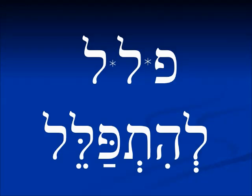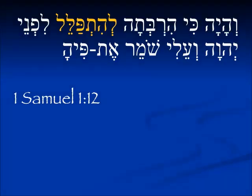In the normal Hitpa'el, a verb you must be familiar with: l'hitpalel, which means to pray. In the Hitpa'el we see the other forms — the past tense form has He-Tav — l'hitpalel, to pray. In 1 Samuel 1:12, Chana is praying. It's the same verb idea — she multiplied to pray. We wouldn't translate it with an infinitive in English.